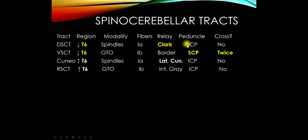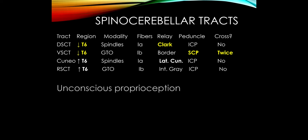Three of the four spinocerebellar pathways go through the inferior cerebellar peduncle. The ventral spinocerebellar tract is the oddball pathway — it crosses twice: once in the spinal cord and again in the superior cerebellar peduncle. This is how the cerebellum gets information about what's actually happening with movement, sometimes referred to as unconscious proprioception. Conscious proprioception goes up through the posterior columns and medial lemniscus — you are aware of where your foot is in space. Unconscious proprioception is automatic, not involving conscious awareness.